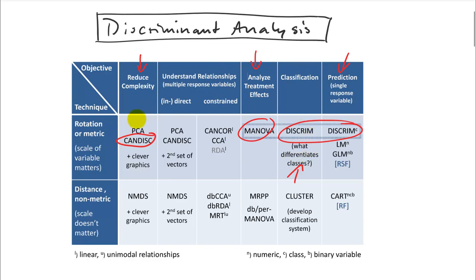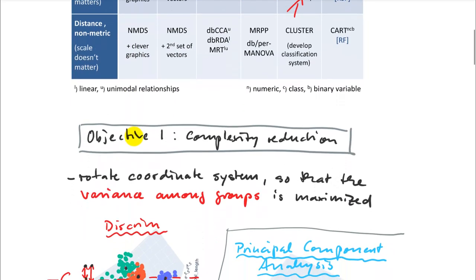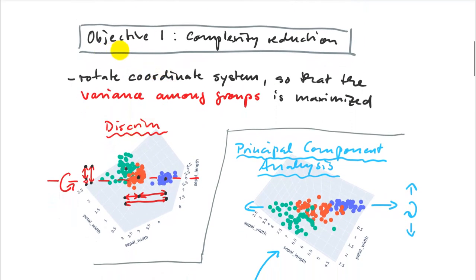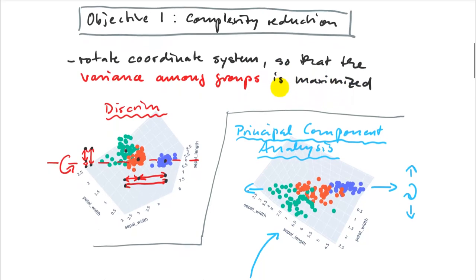All of these are based on the same type of math. Starting with canonical discriminant analysis, because that's closest to what we already know — principal component analysis. The objective is complexity reduction: we rotate a coordinate system so that the variance among groups is maximized. That is very similar to PCA, where we rotate so that the variance among observations is maximized.